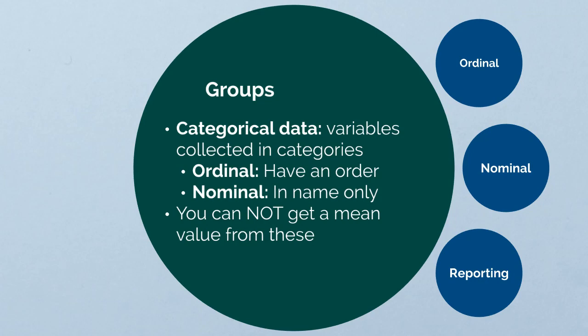You cannot get a mean from categorical variables. There is no way to get a mean age if you have people select their age in a group setting.